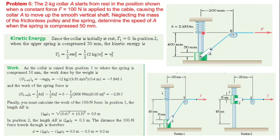From the figure, the distance given is 300 mm, which is 0.3 meters. The line of action is 400 mm. The spring constant is 2 kN per meter.